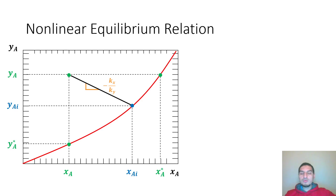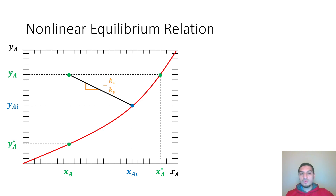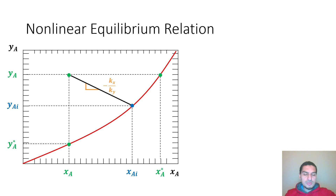We are still talking about mass transfer between phases and the relation between the overall and individual mass transfer coefficients. We have done this for systems where the equilibrium relation follows Henry's law or is a linear relation, and we're going to do the same for cases where the equilibrium relation is non-linear.